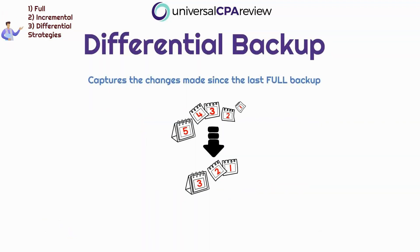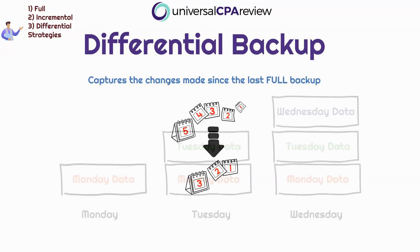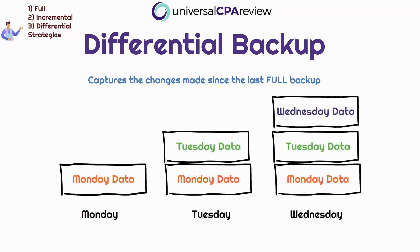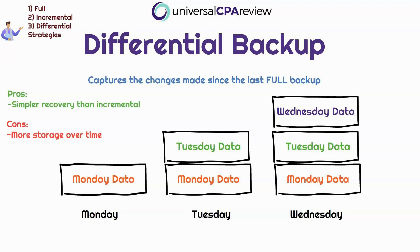Differential backups is our third type. Differential backups capture changes relative to the last full backup. Each differential backup grows in size — on Monday, it's only looking at the changes since the last full backup on Sunday; on Tuesday, it's Monday and Tuesday; on Wednesday, it's Monday, Tuesday, Wednesday, and so on. So it's growing in size with each differential backup. Recovery, though, is simpler compared to incremental backups because it's only the last full backup plus the last differential backup. Storage requirements increase over time because each backup grows.